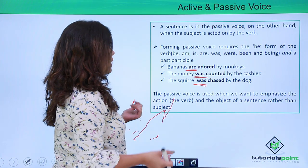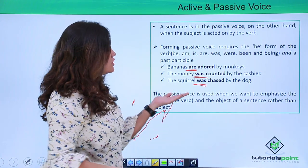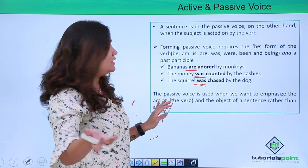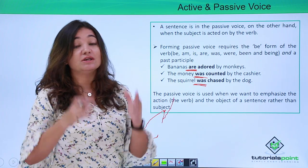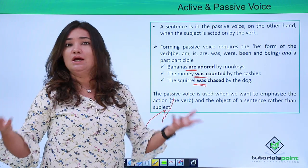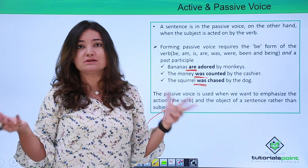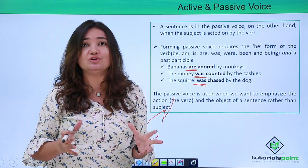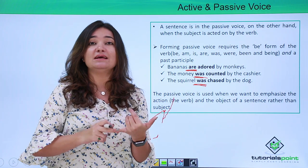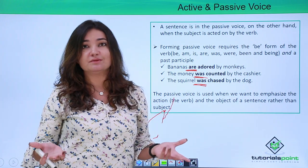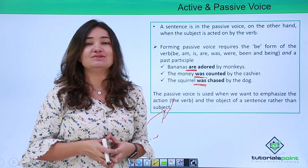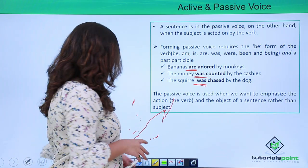Passive voice is used when we want to emphasize the action and the object of a sentence rather than the subject. Two checkpoints to gauge whether a sentence is in passive voice: first, your subject is not going to be central anymore; second, it will invariably have a be-form of a verb. Once you see these two things and realize it's not direct, you will easily gauge that yes, this is in passive voice.